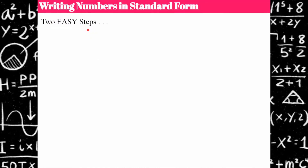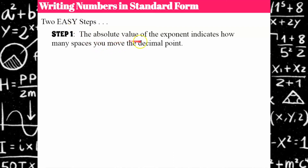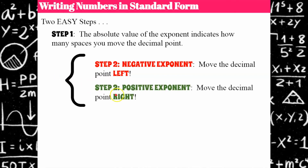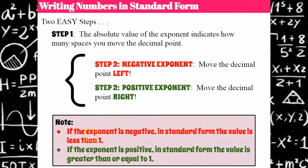Now we're going to talk about going from scientific notation back to standard form — just two easy steps. Step one: the absolute value of the exponent indicates how many spaces you need to move the decimal point, and it also tells you the direction. If you have a negative exponent, you're moving the decimal to the left, because your number is getting smaller — a negative exponent represents a number less than one. If it's a positive exponent, you move your decimal point to the right, because a positive exponent represents a larger number.